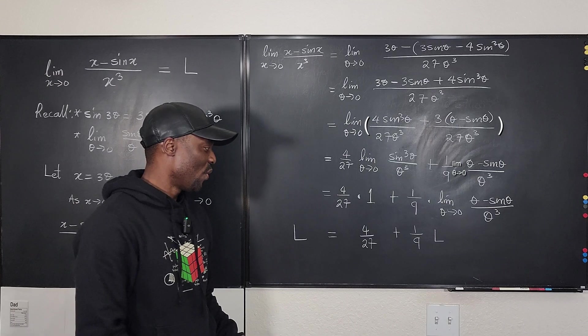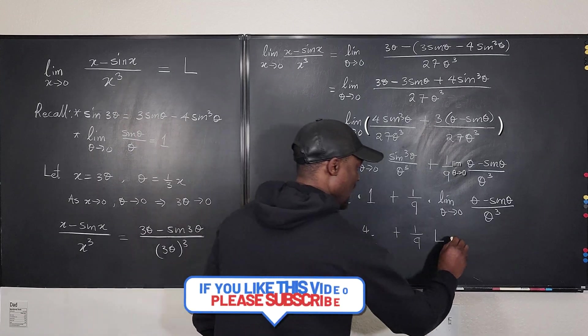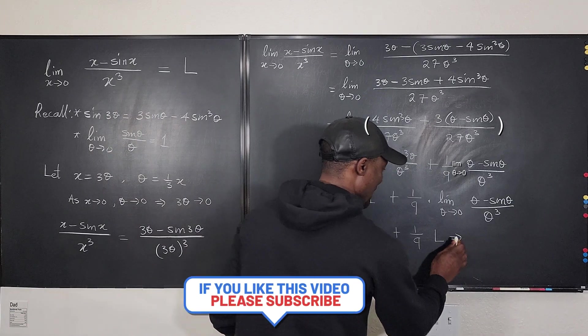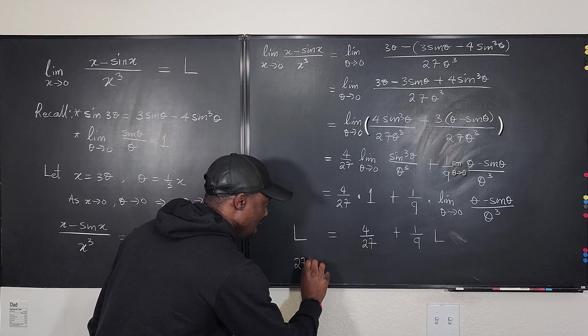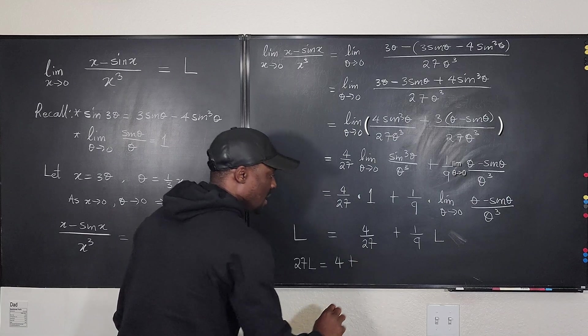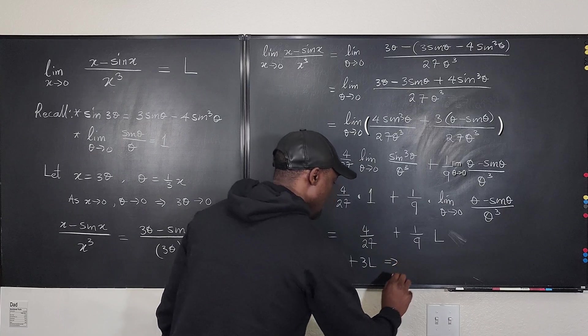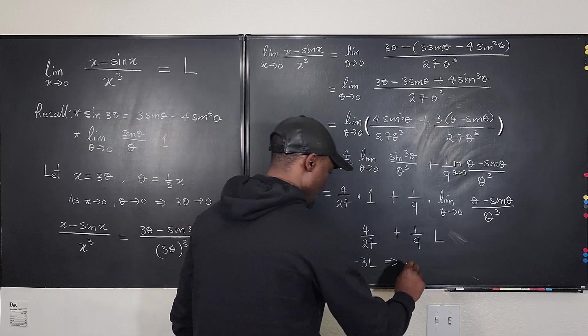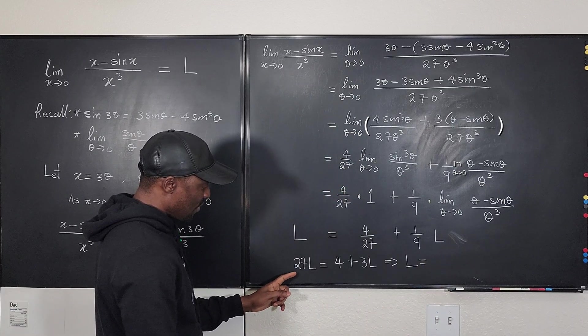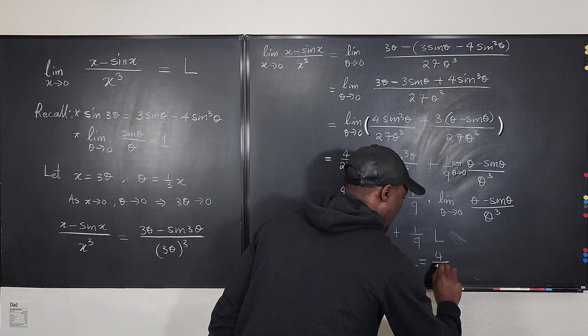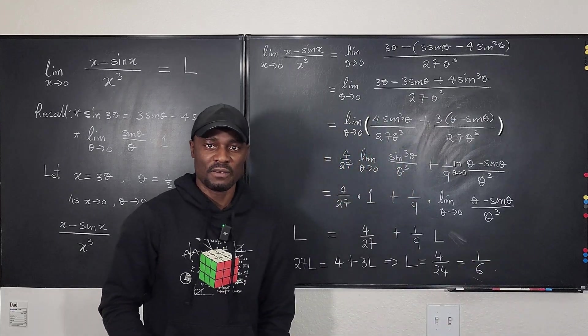So can you solve a simple equation? Just collect the like terms, or we can actually multiply everything by 27. And what would that be? This implies, let's go one line down. If you multiply everything by 27, you're going to have 27L is equal to 4 plus 3L, which implies that if you bring this L here, L is going to be 4 over 24. It's going to be 4 over 24, which is 1 over 6, which is the limit of this problem.